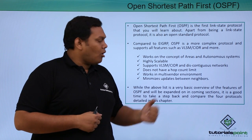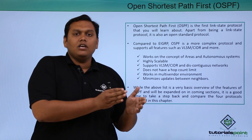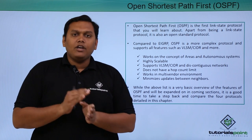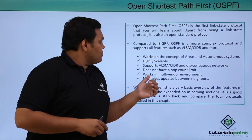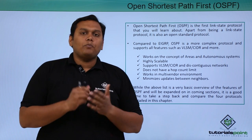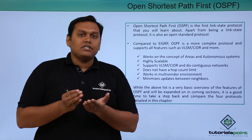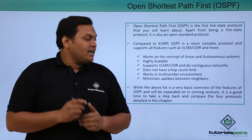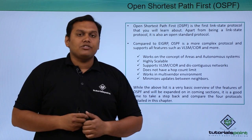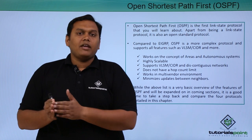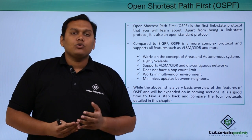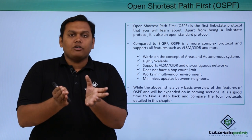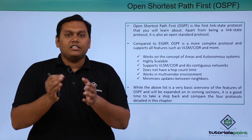OSPF does not have a hop count limit. In RIP, the maximum hop count limit is 15, but OSPF does not have any hop count limit. It works in a multi-vendor, open standard environment. It also minimizes updates between neighbors by maintaining a neighbor table, so whenever a route is forwarded it looks at that neighbor table and retrieves information about the neighbors assigned to that interface.